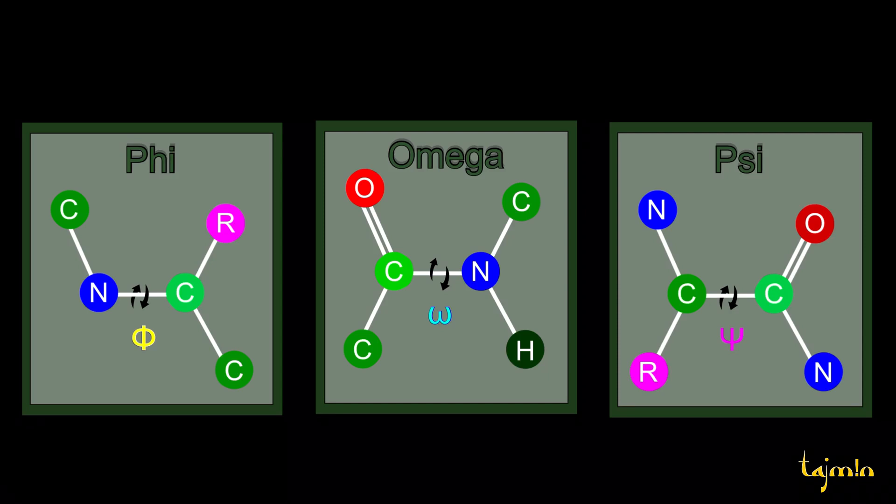There are three kinds of these torsion angles which are called phi, omega, and psi.